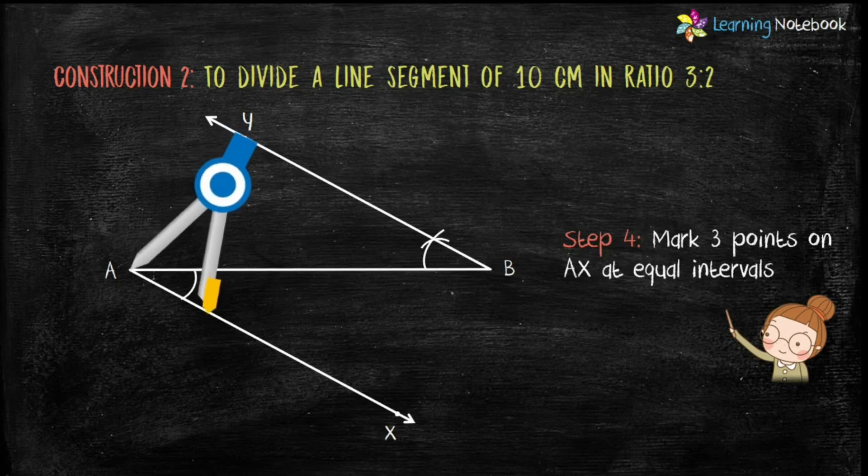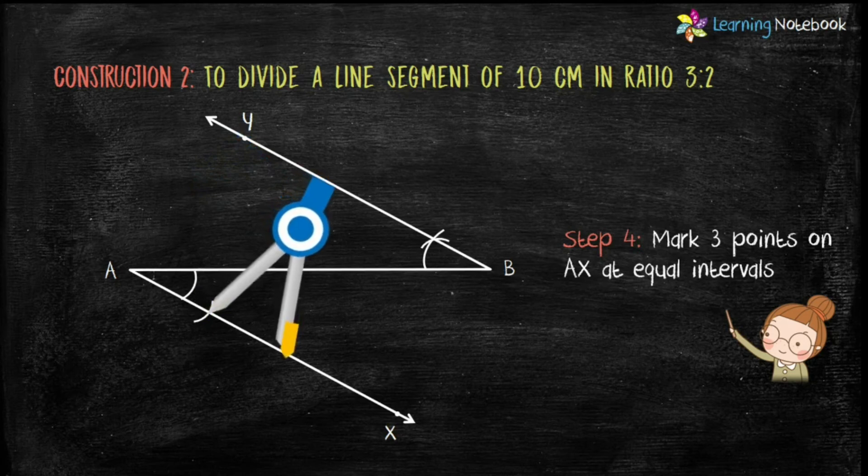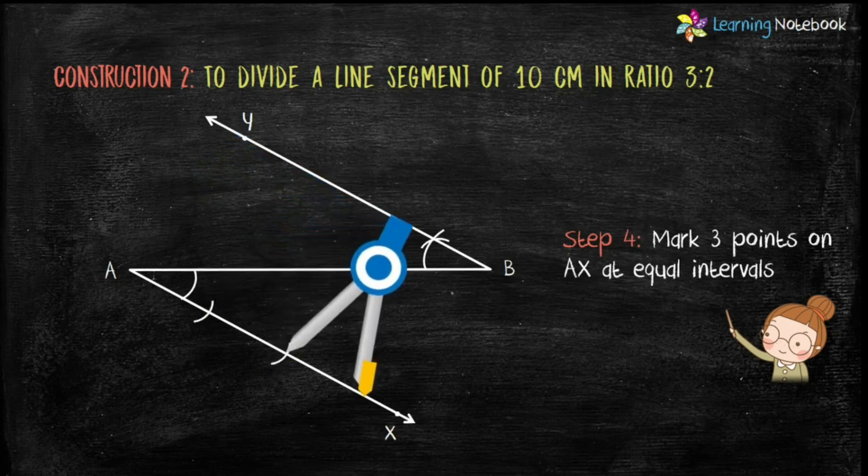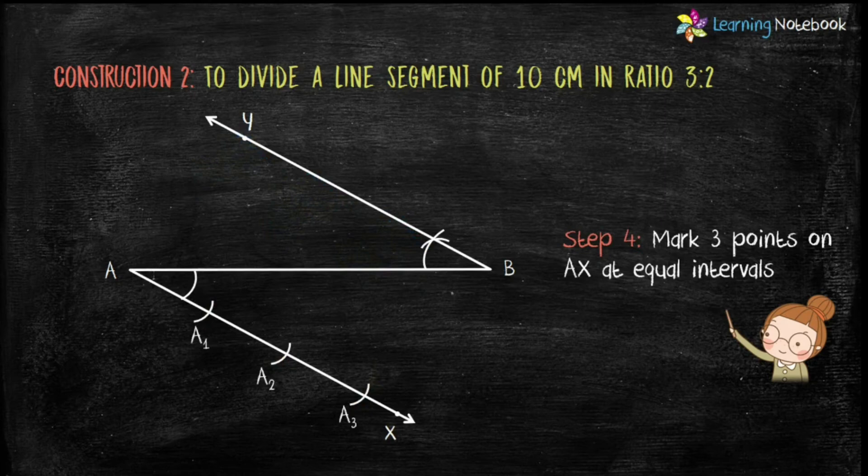Let's first mark 3 points on AX at equal intervals and name them as A1, A2, and A3.